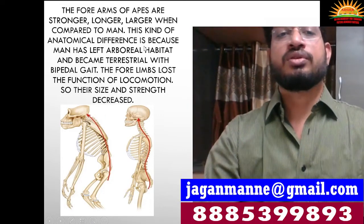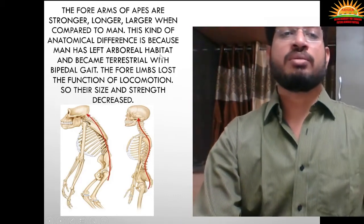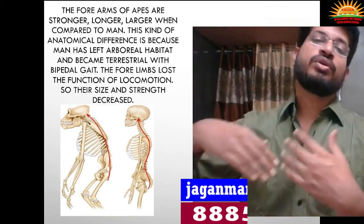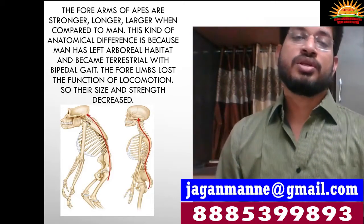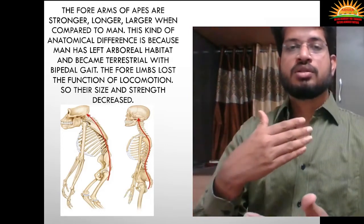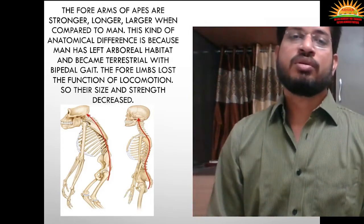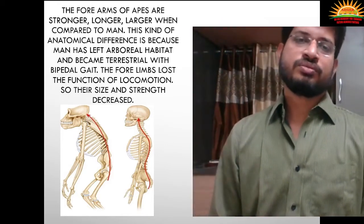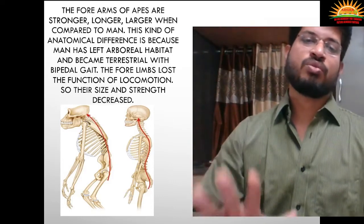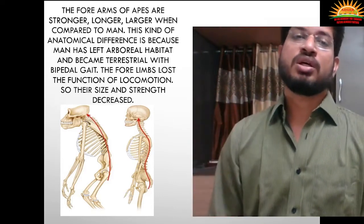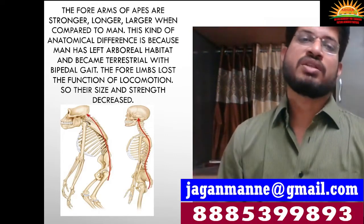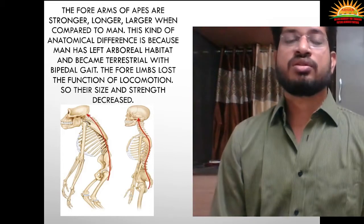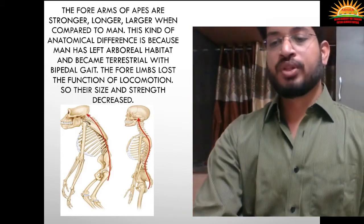When ancestors gradually started coming down from the canopy due to environmental changes — such as forests converting into grasslands — and began moving on the ground using legs only for locomotion, the size of the hands decreased and the forelimbs lost the function of locomotion. According to Lamarck's and Darwin's evolutionary theories, when you stop using an organ, it slowly degenerates. This is one of the anatomical differences between man and apes.